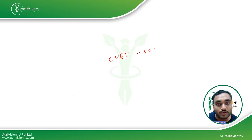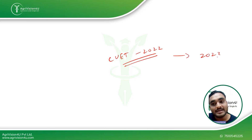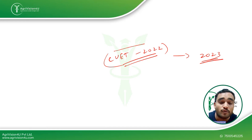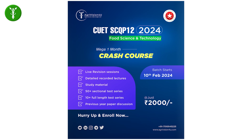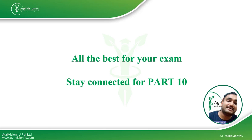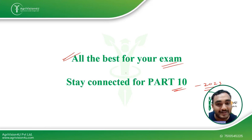This concludes all questions from CUET 2022. From the next series onwards, we will move to questions from 2023. We covered a detailed explanation of almost all Food Science and Technology questions from CUET 2022. If you have any doubts or want a detailed explanation of any topic, comment your queries below. For guidance on joining a batch or concept clearance, contact us through the website or connect with me on LinkedIn. Stay connected, and all the best for your exams! This was Divyanshu Gupta, your mentor for Food Science and Technology.